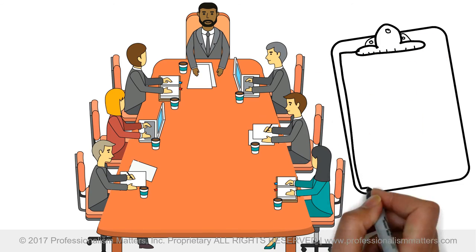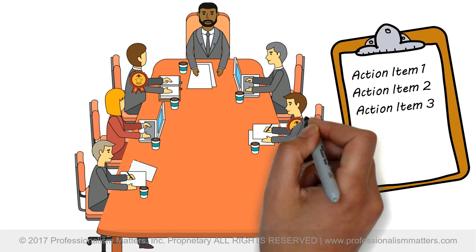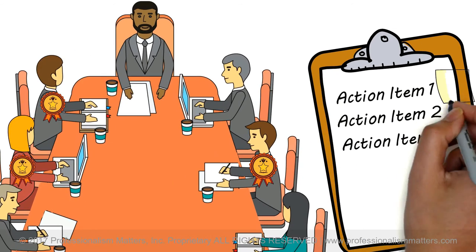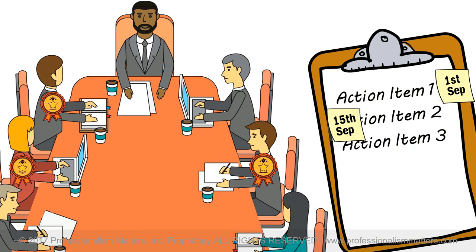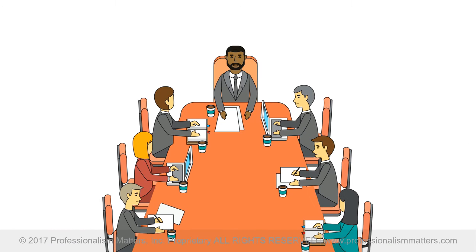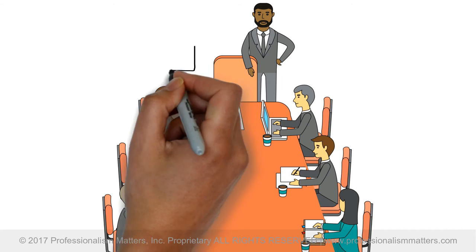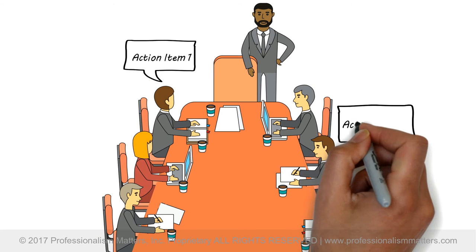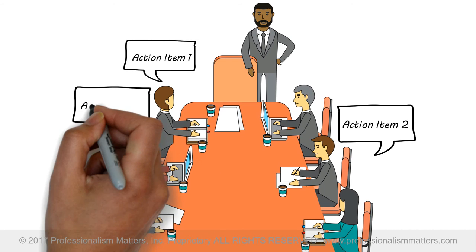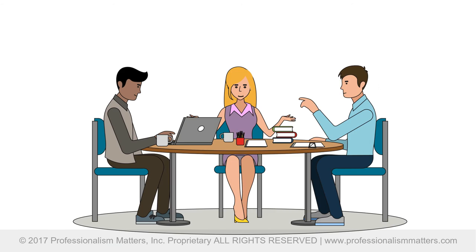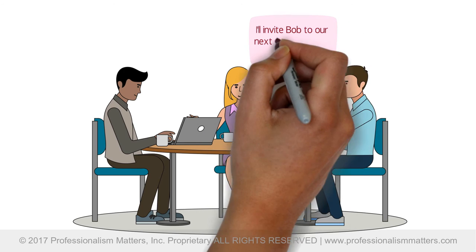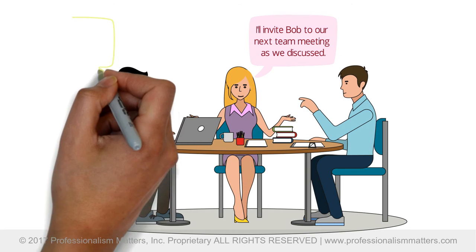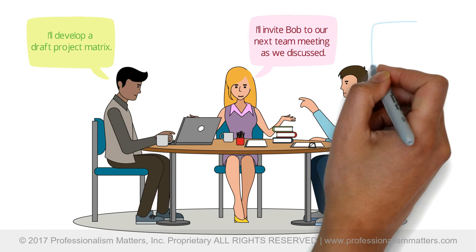Virtually all teams take the time to define owners and due dates for all action items that arise during the retreat. These action items should be reviewed at the end of the retreat to ensure that everyone is on board with the planned next steps. Also, some teams define a small follow-up team where two to three team members volunteer to take lead on following up on items as needed.